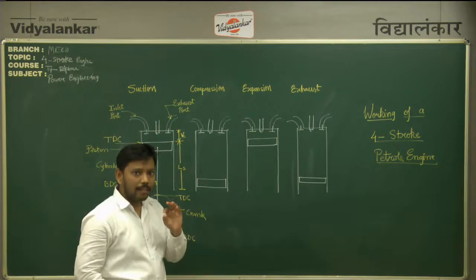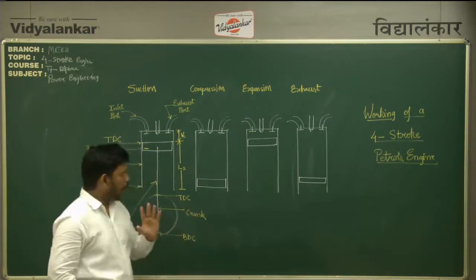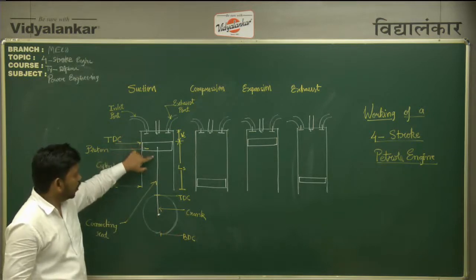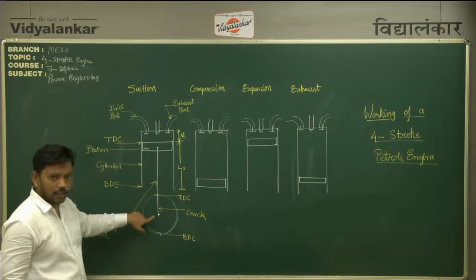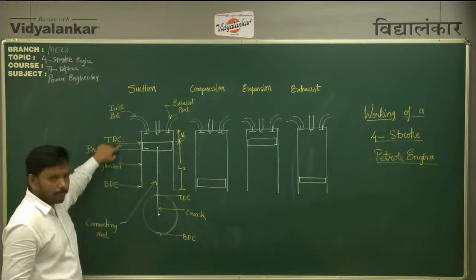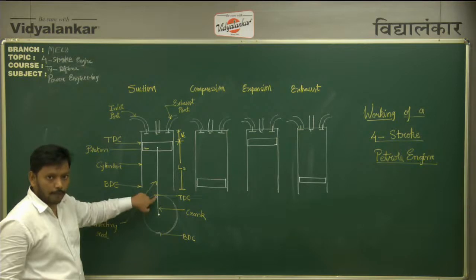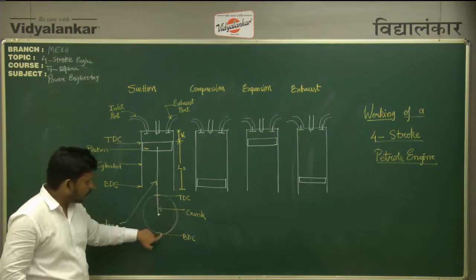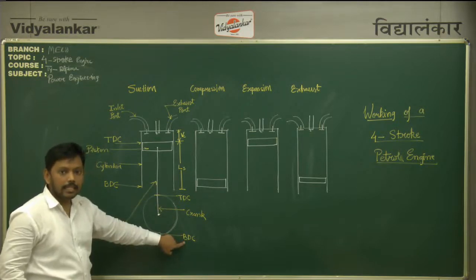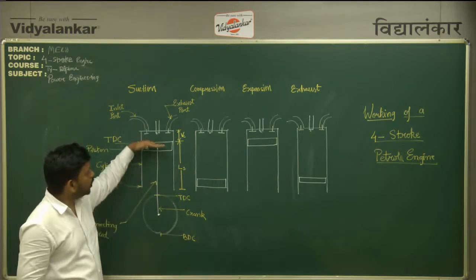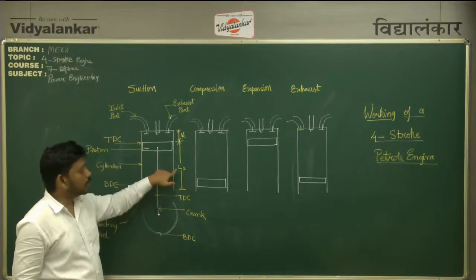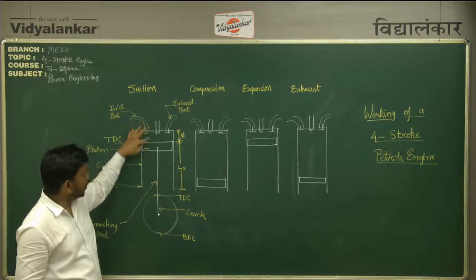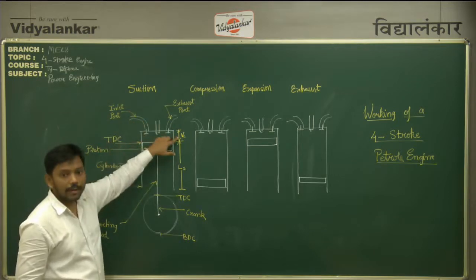Let us understand the working and the terminologies used in a 4 stroke engine. As we can see over here, we have a piston cylinder mechanism in which we have a piston which is having a connecting rod and a crankshaft. The top part of the piston where the crank position is at the top is called as top dead center, and when the same position comes to the bottom, it is called as bottom dead center. The distance travelled by the piston between the top dead center and the bottom dead center is called as the stroke length, and the volume between the cylinder head and the piston head at the top dead center is called as clearance volume.